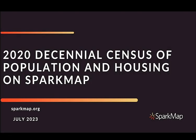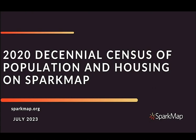Hello and welcome to SparkMap. I'm Shay, and today we are going to explore population and housing data from the 2020 Decennial Census of Population and Housing. First, I'm going to tell you a little bit about the Decennial Census, then we'll walk through map layers from this dataset in the SparkMap map room. Lastly, we will explore the Population Living in Group Quarters indicator in the SparkMap Community Needs Assessment and talk about how you can use this data in your community. Let's get started.